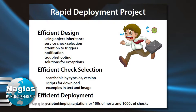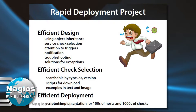Don't have three people implement three different ways, because then you have three different troubleshooting methods. You know this stuff is going to break, and you know you're going to have to troubleshoot it. So troubleshooting is part of what you have to think about.